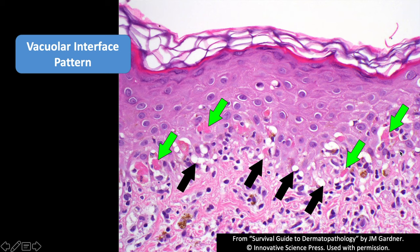A quick test for interface dermatitis: can you easily draw a line where the basal layer of the epidermis or the basement membrane is? Not really here — it's kind of blurry. See how it's blurred? It's not a clear-cut interface between the epidermis and dermis. Whenever I see that, it instantly makes me think there's interface dermatitis. Then I go look for scattered lymphocytes, vacuoles, and dying keratinocytes.